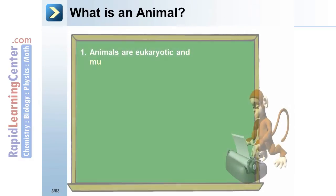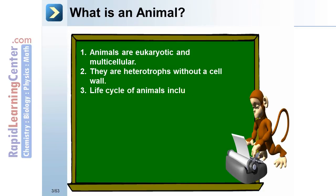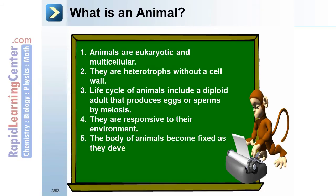What is an animal? Animals are eukaryotic and multicellular. They are heterotrophs without a cell wall. The life cycle of animals includes a diploid adult that produces eggs or sperm by meiosis. They are responsive to their environment, and the body of animals becomes fixed as they develop, although some do undergo metamorphosis later on.